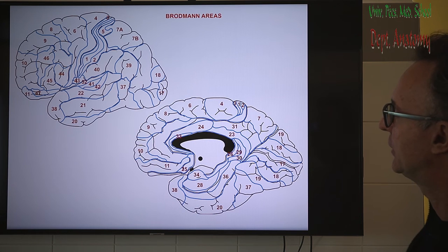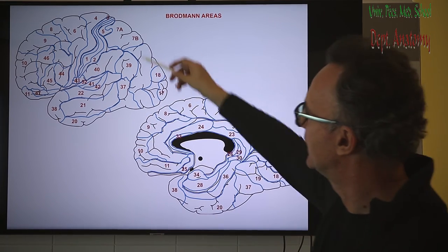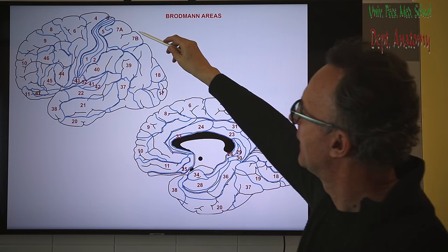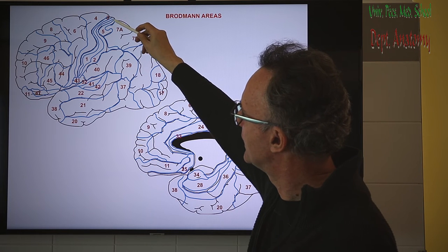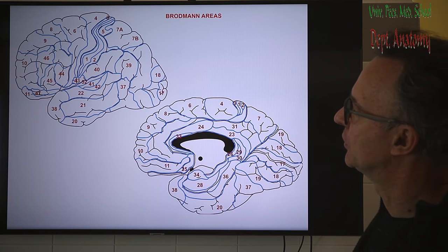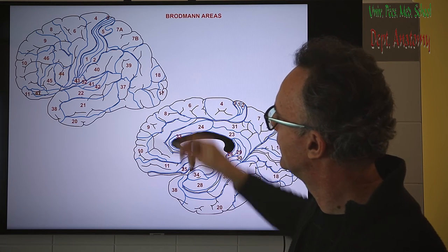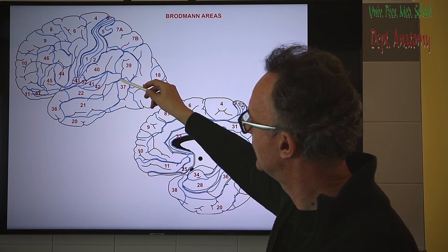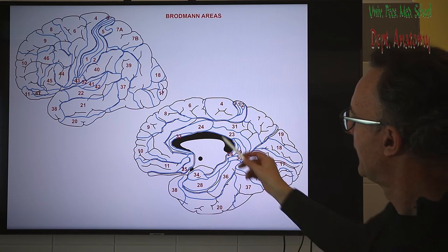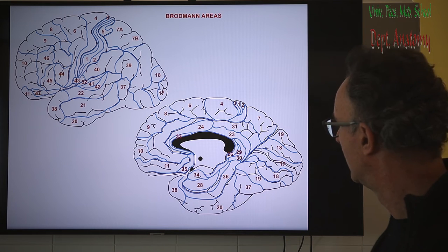The Brodmann areas are shown in this picture — we studied some, not all 52. We studied area 4 as primary motor, area 6 as premotor, area 8 as the frontal eye field, areas 3, 1, 2 behind the central sulcus as primary somatosensory, areas 44-45 for the motor speech center as Broca's area, areas 41-42 for the acoustic center, areas 17-18-19 for the visual center, and area 22 as the restricted Wernicke's area with areas 39-40 forming the larger extent of Wernicke's area. On the medial surface, the cingulate gyrus is area 24, and the uncus for olfactory is area 34.